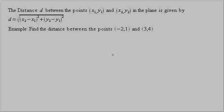All right, let's look at finding the distance between two points and the coordinates for the midpoint of a line segment. Here we have the distance formula. The distance d between the points (x₁, y₁) and (x₂, y₂) in the plane is given by d equals the square root of (x₂ - x₁)² plus (y₂ - y₁)². Here's an example.